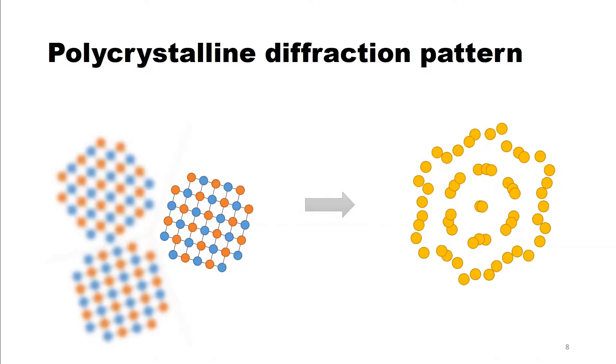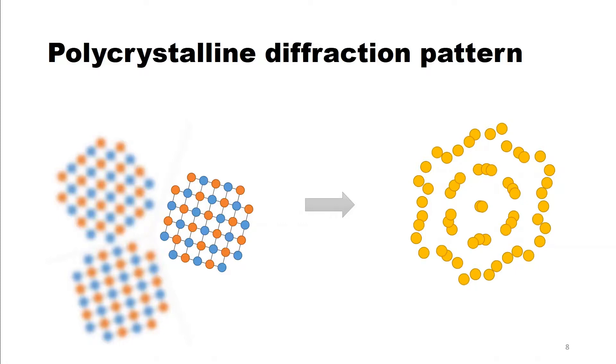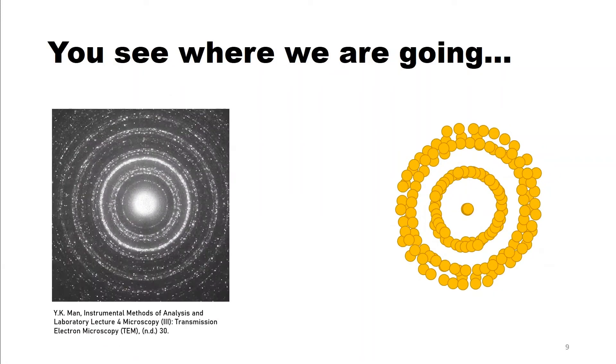You already see where this is going. That's why a diffraction pattern of a polycrystalline substance appears as multiple rings.